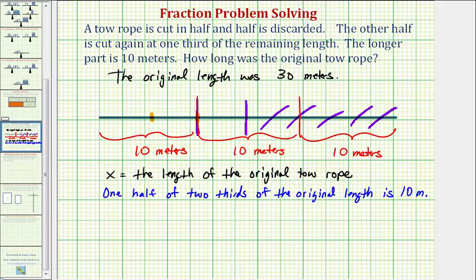And now from here we can write an equation. We have one half of means multiplication. So one half times, and then we have two thirds, and we have of the original length, which would be times x, must equal 10.